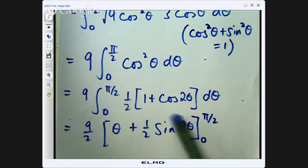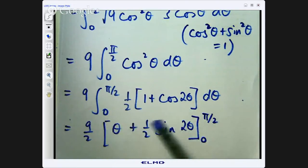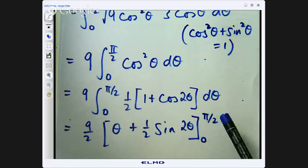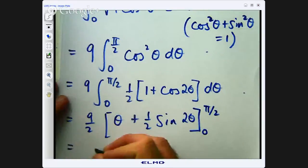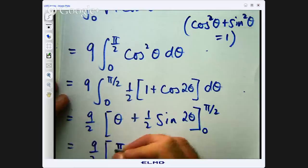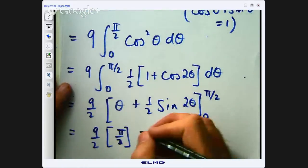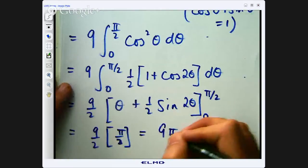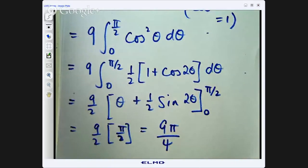And because it is definite integral when I plug in this and this the theta equals 0 is going to give me 0 and the pi on 2 will give me pi on 2 there and 0 there so when I plug those in I will get that which is just 9 pi on 4.